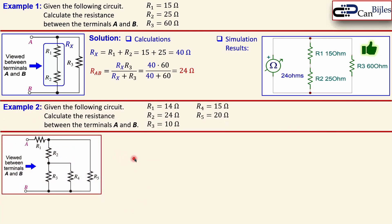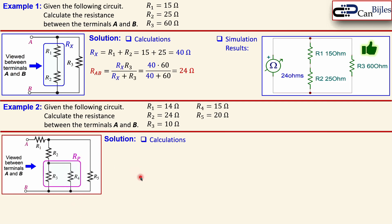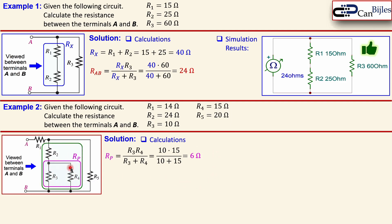Example two for the series-parallel combination is more challenging — it has five resistors R1 through R5, and we again calculate the resistance between nodes A and B. Working step by step: first, I identify the parallel combination of R3 and R4, called Rp. Using the product-over-sum formula and substituting the values, Rp = 6 ohms.